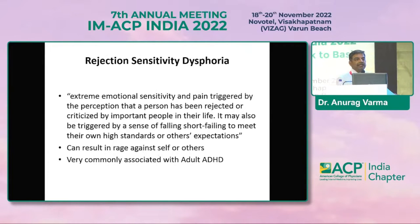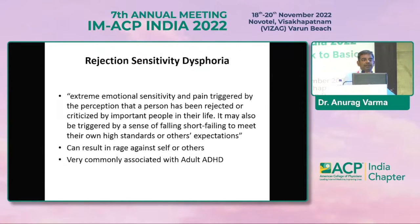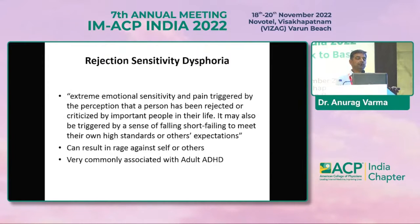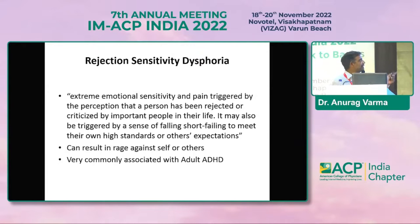Many times this is also seen — rejection sensitivity dysphoria. ADHD patients have expectations from themselves and from the family, and once this is not met, they have extreme rage and many times they are not able to control it. This comes out as violent behavior towards colleagues, spouse, or even towards themselves, and then these patients sometimes get confused with personality disorders also.